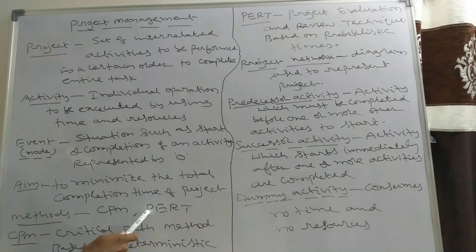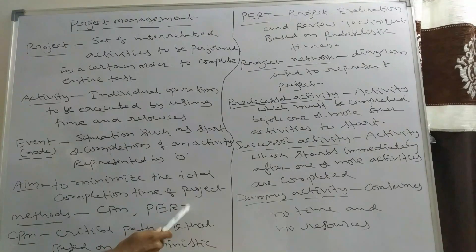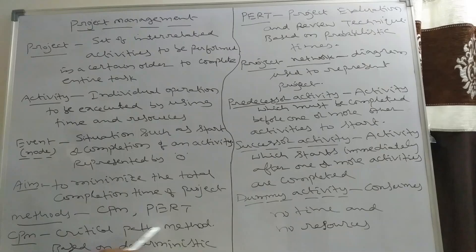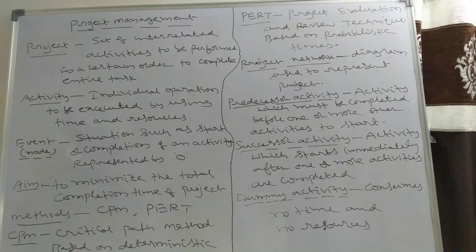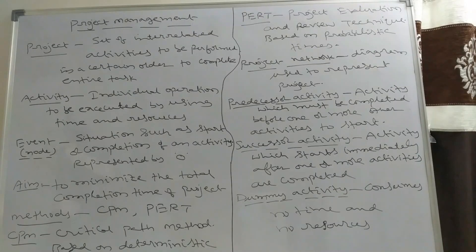The next method is PERT — Project Evaluation and Review Technique. CPM is based on deterministic times, meaning the exact time to complete each activity of the project is known, as in the construction of a building.